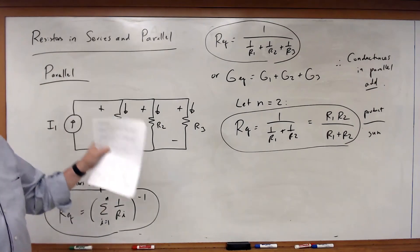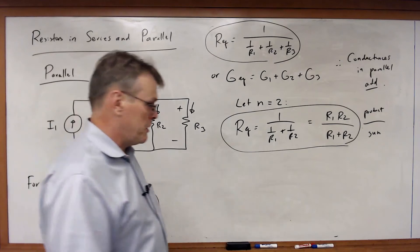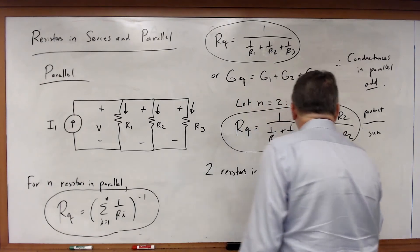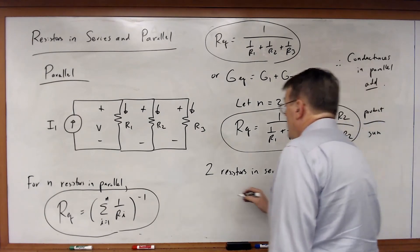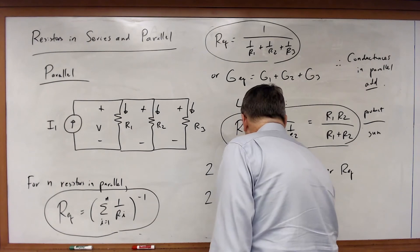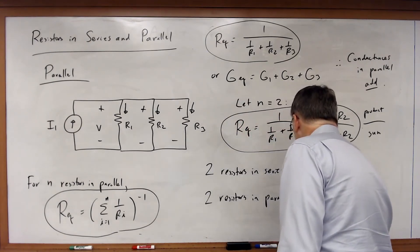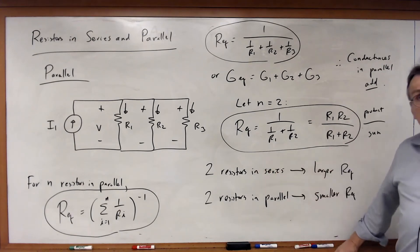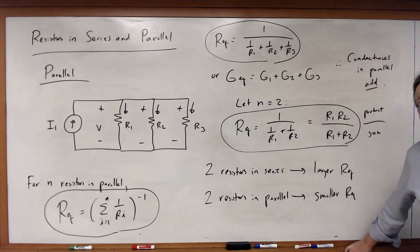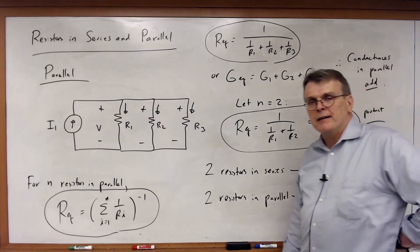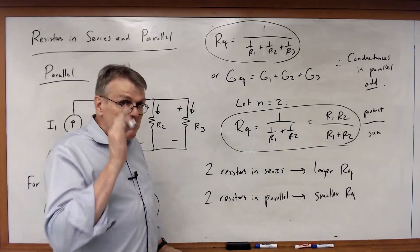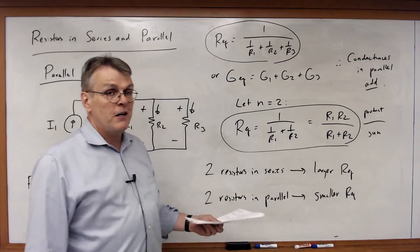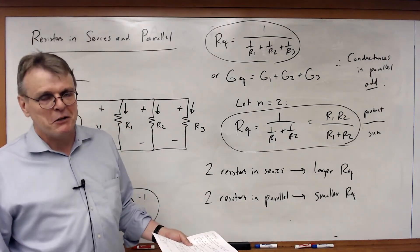Remember: two resistors in series combine to a larger REQ, while two resistors in parallel combine to a smaller REQ. Specifically, in series REQ is bigger than either individual resistor, and in parallel REQ is smaller than either individual resistor. This is a useful sanity check — if a parallel calculation gives a larger result than you started with, you made a mistake.